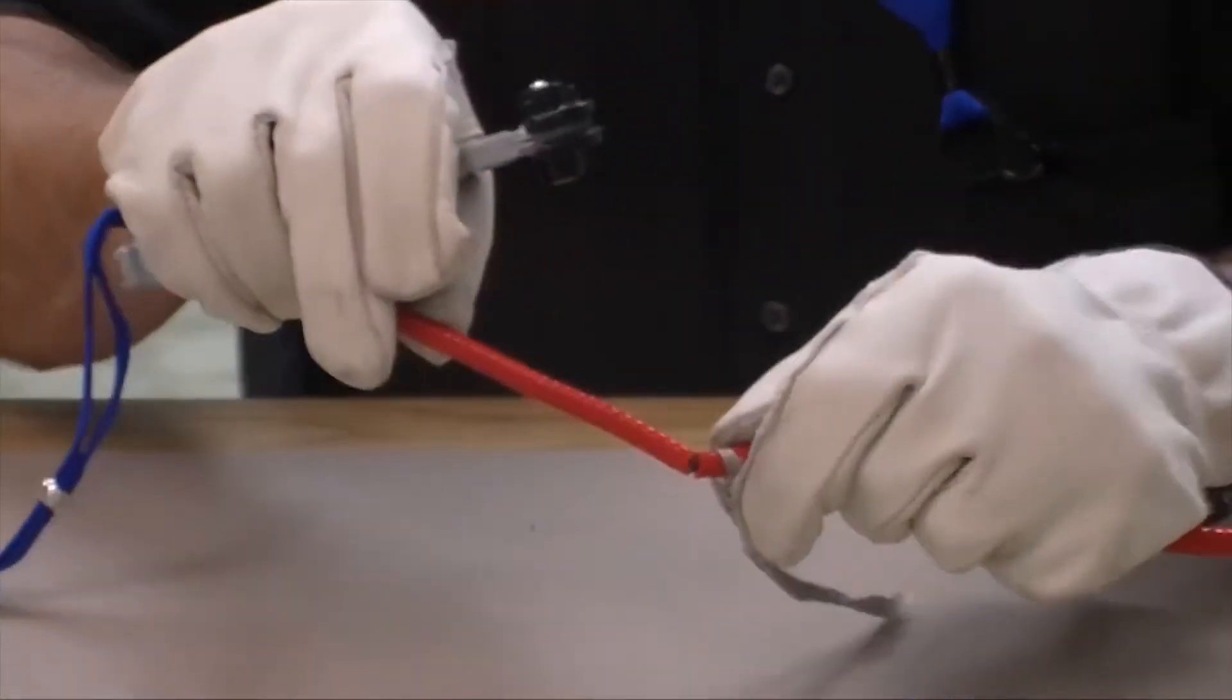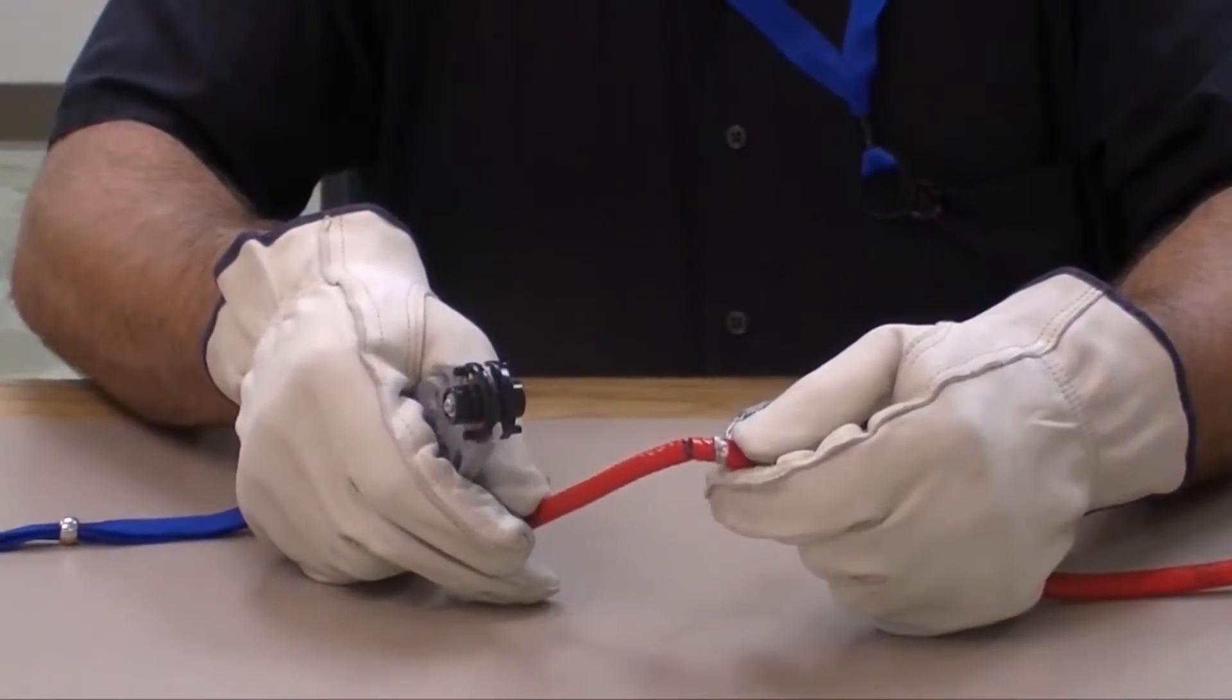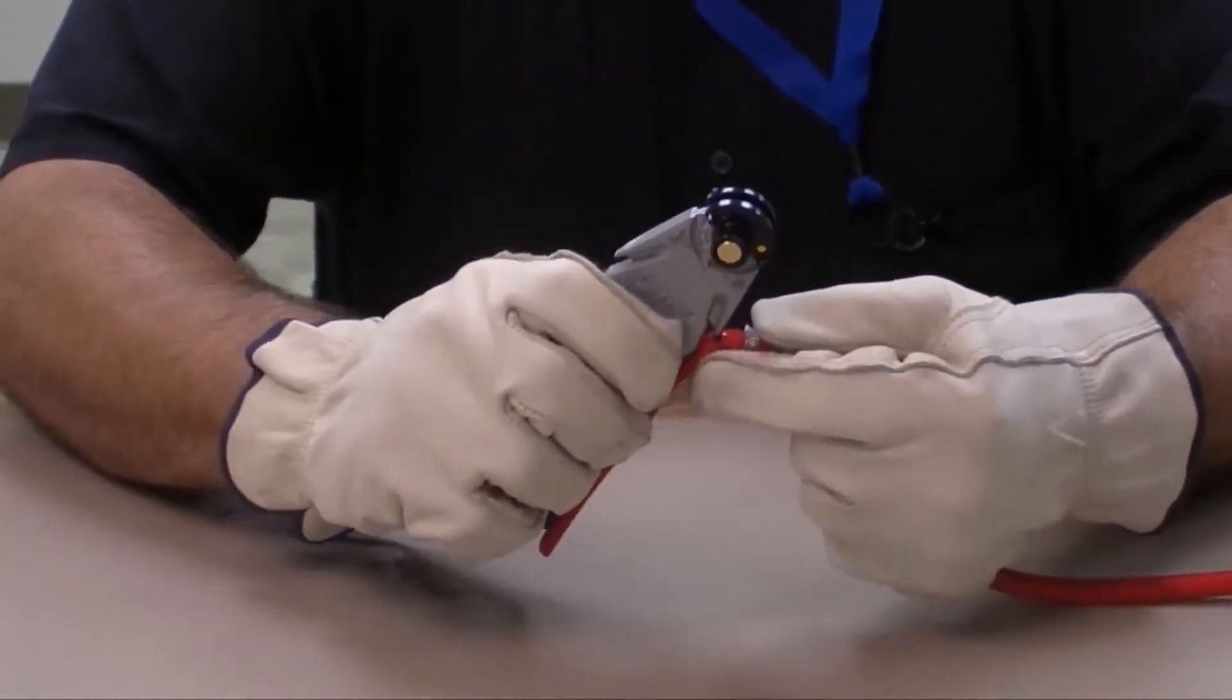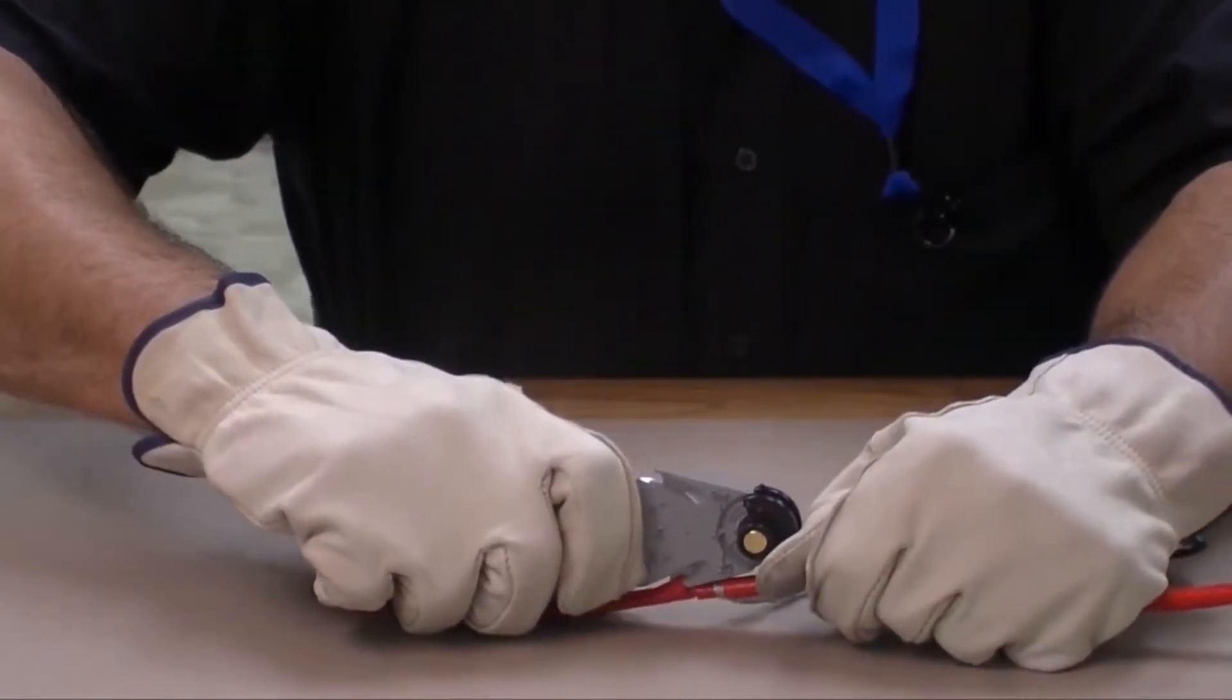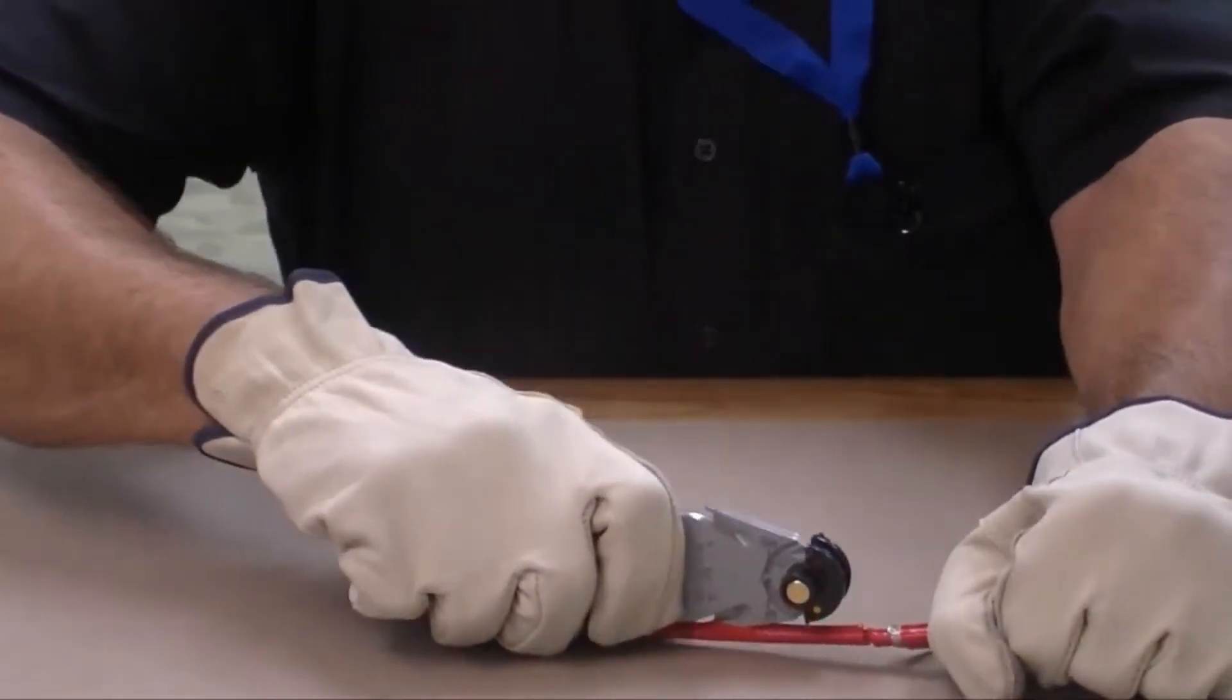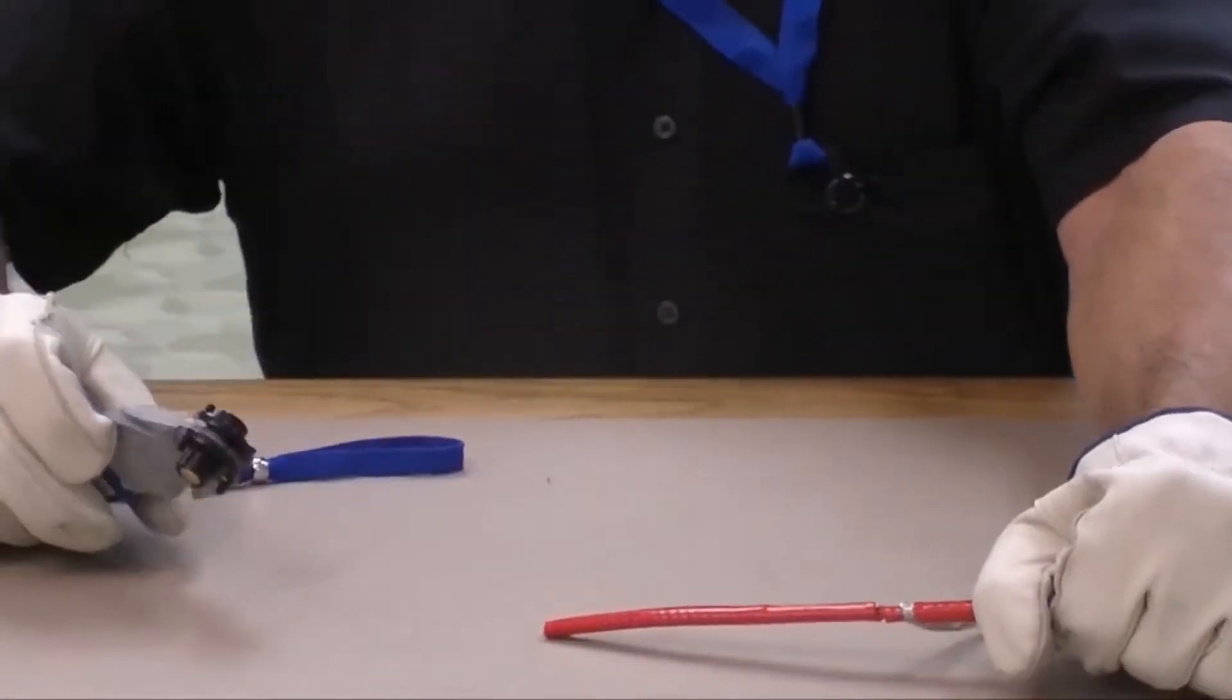Bend the heating cable at the score to separate the jacket. Insert the jacket's slitting tip under the cable jacket. Pull the stripping tool towards the end of the heating cable to slit the jacket.